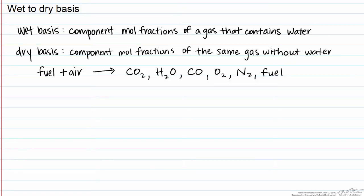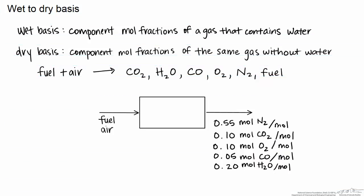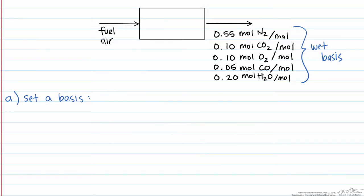Let me give you an example. Here we have a combustion reaction, and when the product is analyzed on a wet basis, it gives you the following mole fractions. What we want to do is find the mole fractions of our gas assuming that there is no water in there, and that's known as a dry gas analysis. The first thing we have to do is set a basis, and here we're going to set a basis of 100 moles of the stack gas coming out.